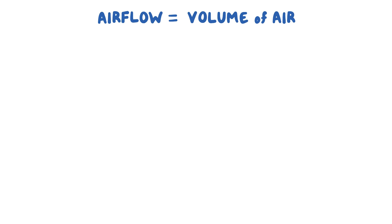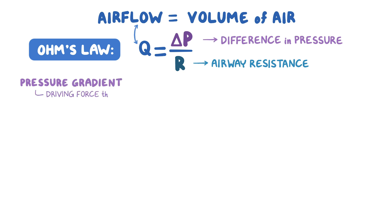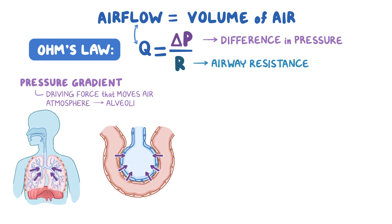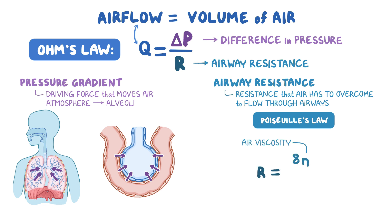As a quick recap: airflow is the volume of air traveling through airways over a period of time, represented by Ohm's Law — Q equals delta P divided by R. The pressure gradient is the driving force moving air between the atmosphere and alveoli, created by changing lung volume during inspiration and expiration. Airway resistance, described by Poiseuille's Law, increases with greater air viscosity (eta), greater airway length (L), and decreased radius (r). Airway radius has the greatest effect since it is raised to the fourth power.